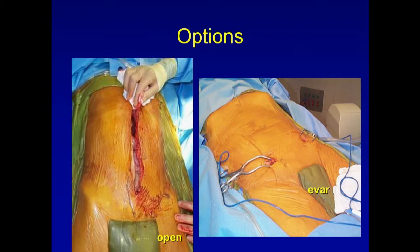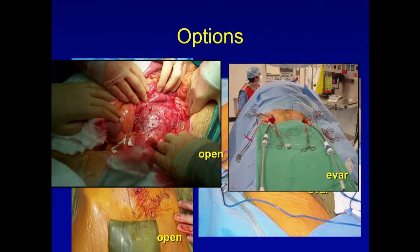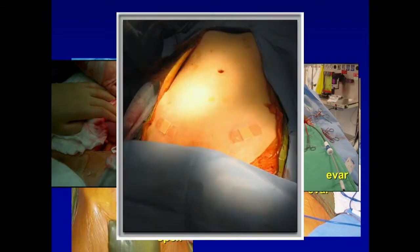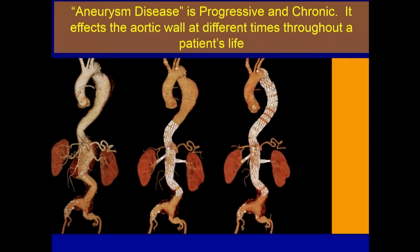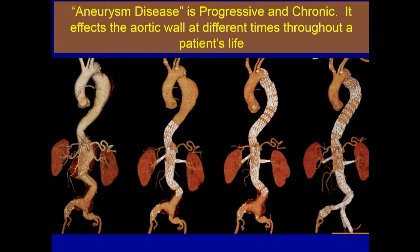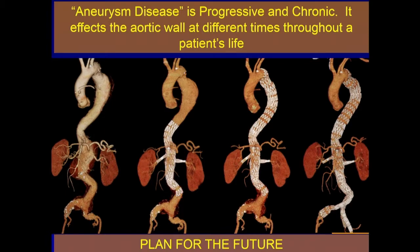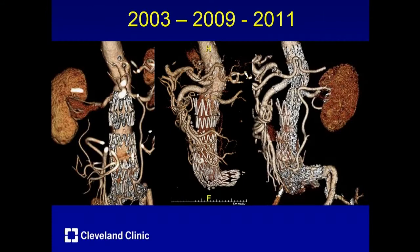So we know the options: big open surgery versus EVAR, which we used to do in somewhat smaller incisions, but has now converted to needle poke and Band-Aid surgery. It seems obvious at first glance, but aneurysmal disease is progressive and chronic — as Dr. Greenberg used to emphasize. It affects the aortic wall at different times throughout the patient's life, and we really have to plan for the future, whether it's an open, endovascular, or hybrid approach.